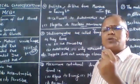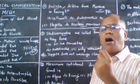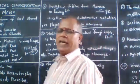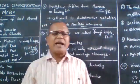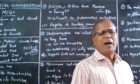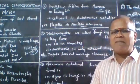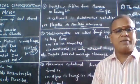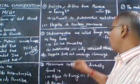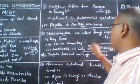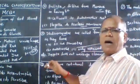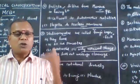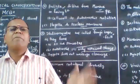Deuteromycetes are called fungi imperfecti because sexual reproduction is unknown or yet to be identified in this group. Only the asexual phase is known. Since sexual reproduction hasn't been identified, they are called fungi imperfecti.